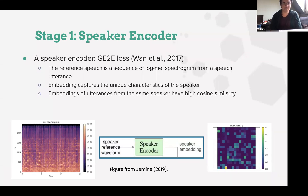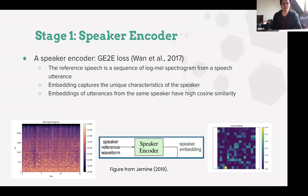The first part is the speaker encoder, shown in a green box, based on generalized end-to-end loss from Wan et al. 2017. The speaker encoder takes in a reference speech — a sequence of a log MEL spectrogram from a speech utterance — and generates an embedding that captures the unique characteristics of the speaker. You can understand this as the unique fingerprint of a speaker's voice. Embeddings of utterances from the same speaker have high cosine similarity, meaning they are closely clustered together in embedding space, as opposed to utterances from two different speakers, which are clustered far apart.